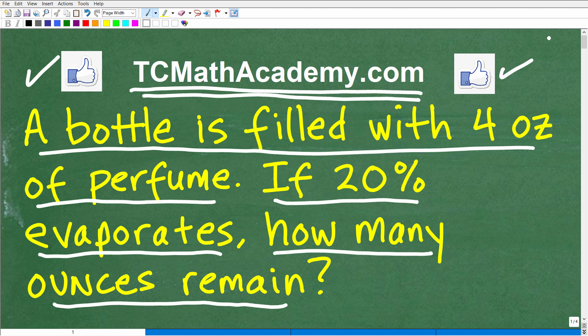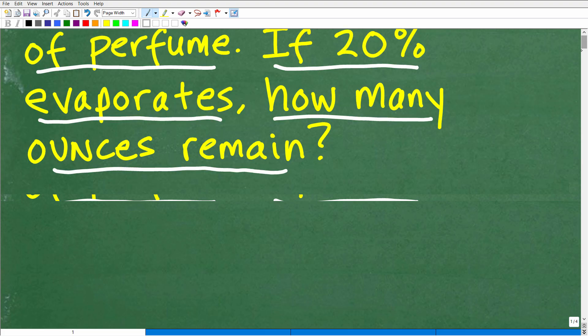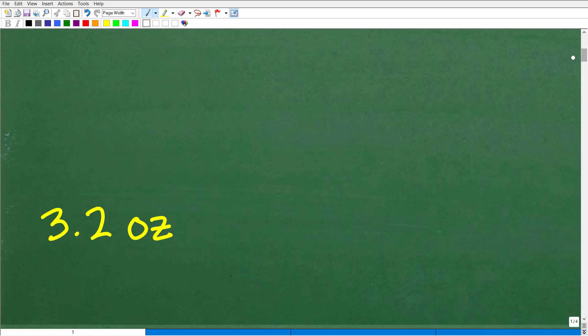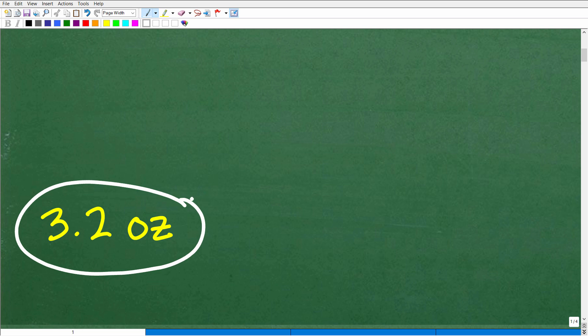So hopefully the problem is pretty clear. Let's go ahead and see how many ounces of the perfume remain after 20% evaporates away. And the answer is 3.2 ounces.